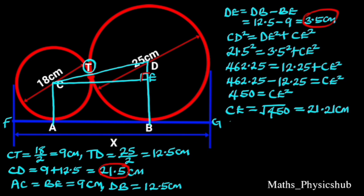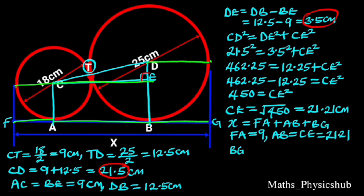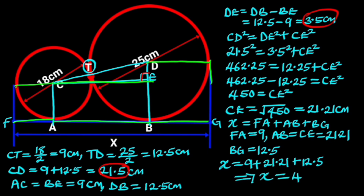To find X: X equals FA plus AB plus BG. FA equals the radius of the small circle, which is 9 cm. AB equals CE, which is 21.21 cm. And BG equals 12.5 cm, which is also the radius of the big circle. Substituting these values gives X equals 9 plus 21.21 plus 12.5, which equals 42.71 cm.